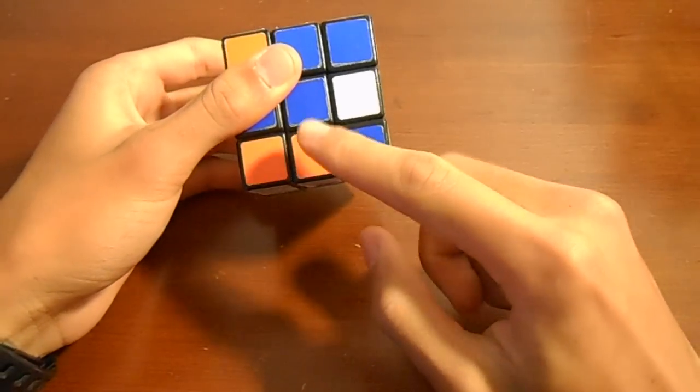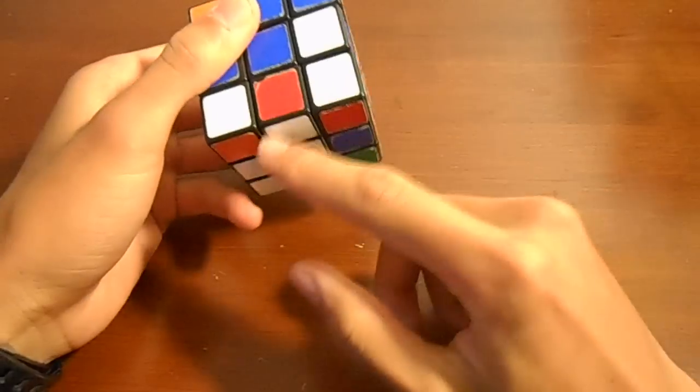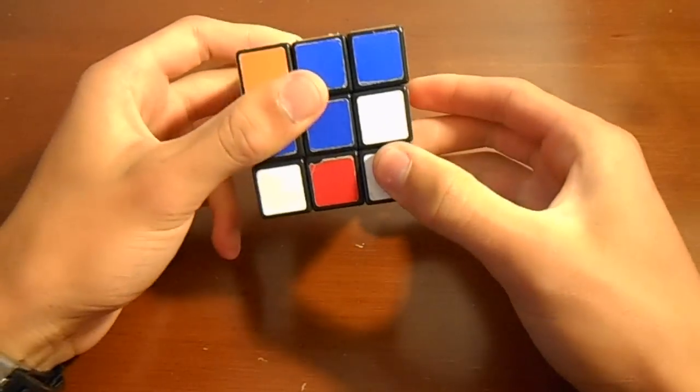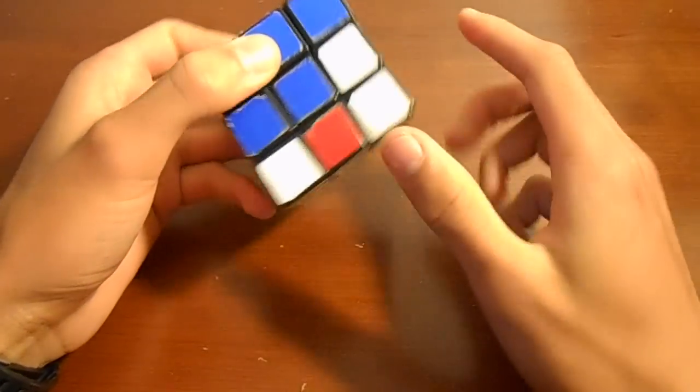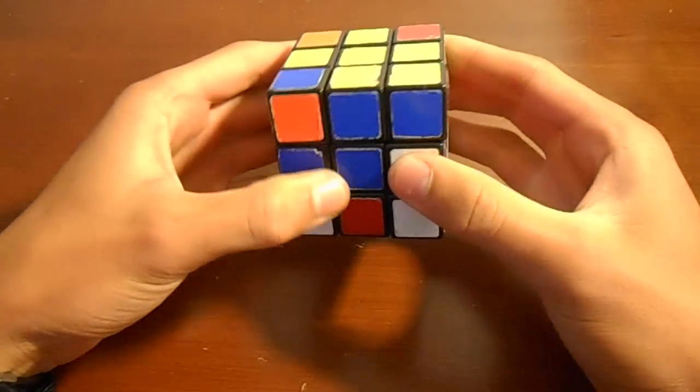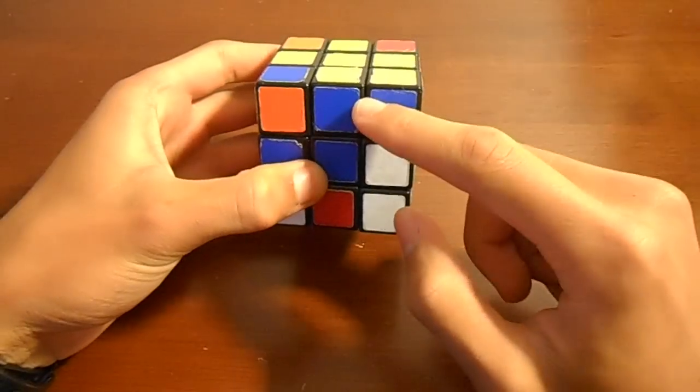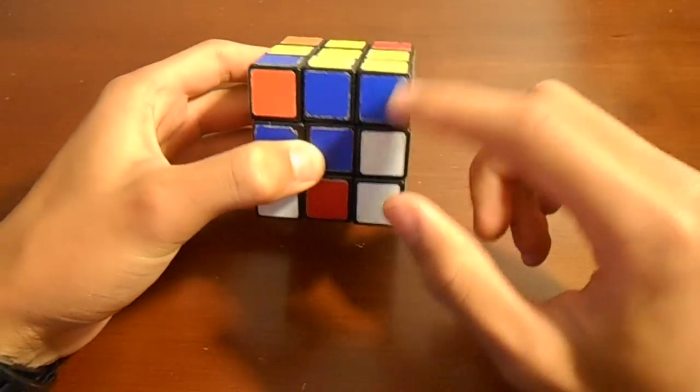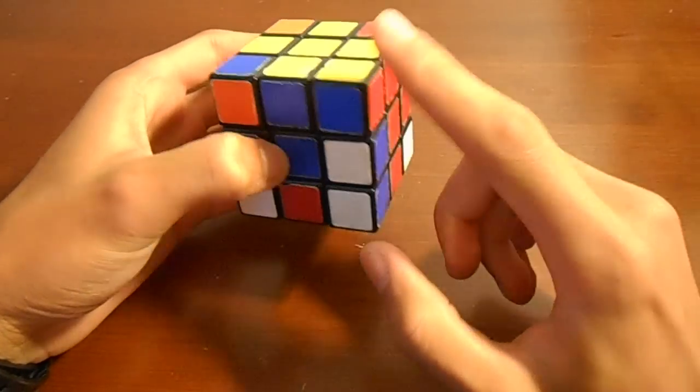Now, don't forget that last D move at the bottom, because if you do forget it, that will mess up your first two layers, and you'll have to pretty much start over. So, after you do that either two or four times, depending on the piece, now it's solved.